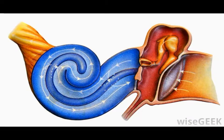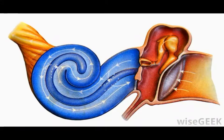A bone comparable to the stapes in humans is also found in non-mammalian creatures, where it is called the columella.